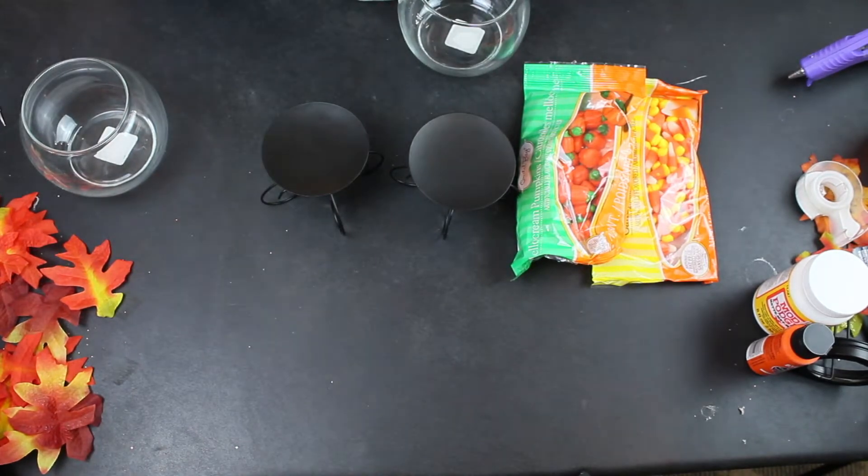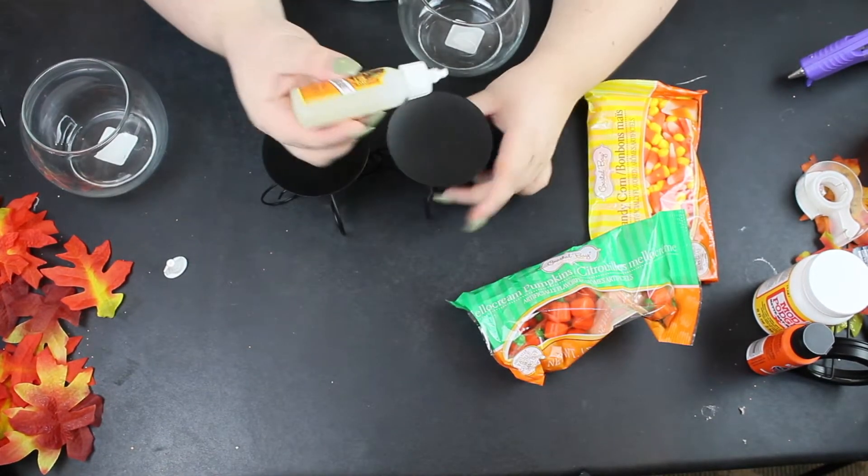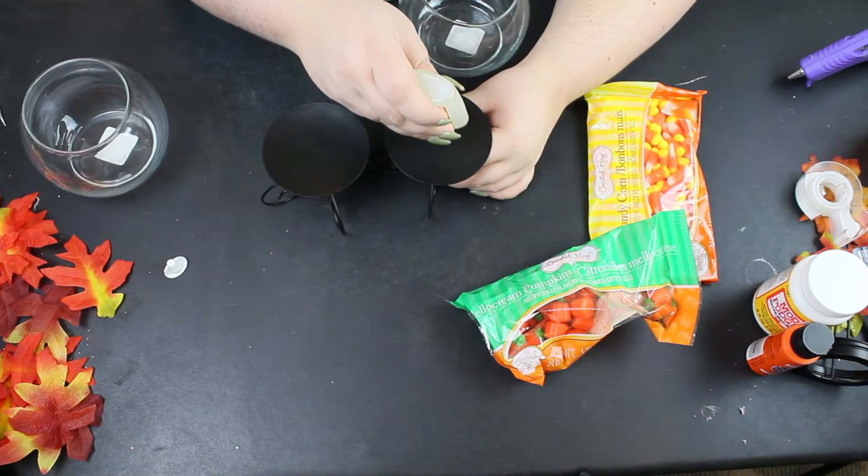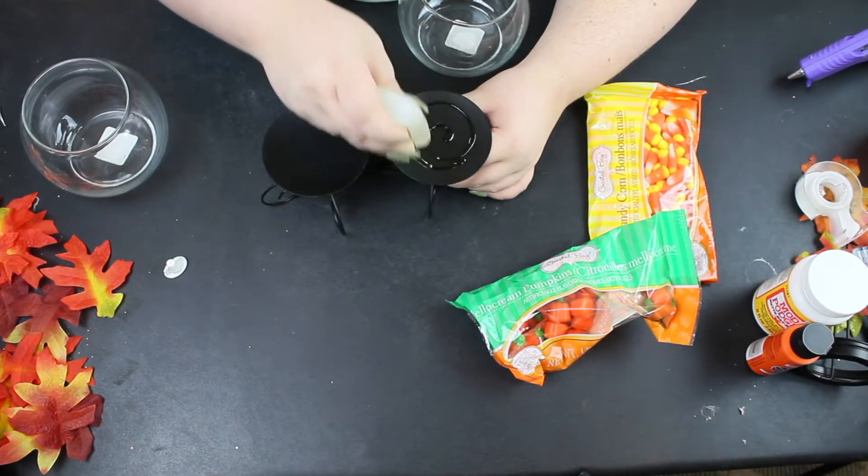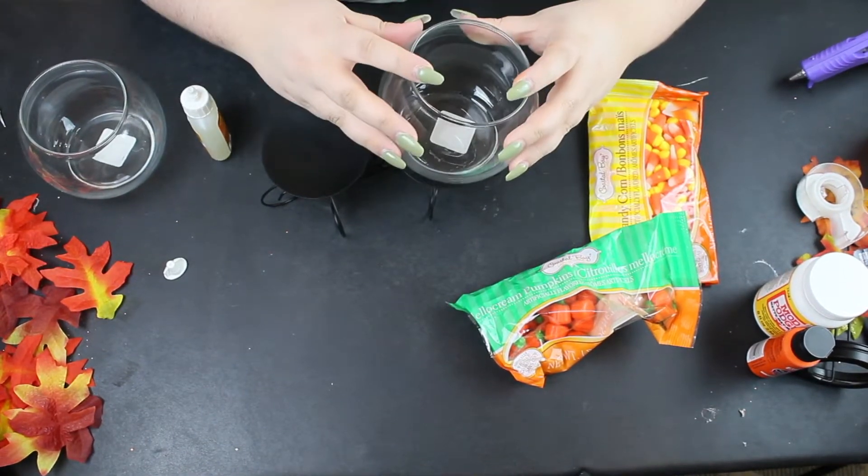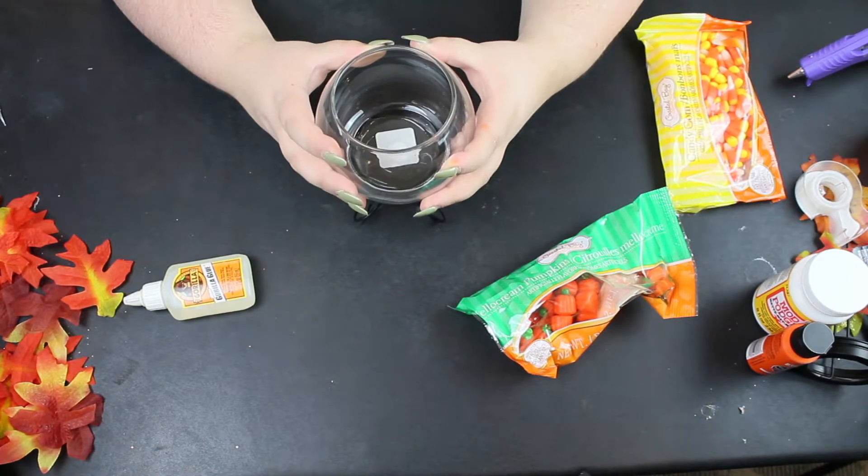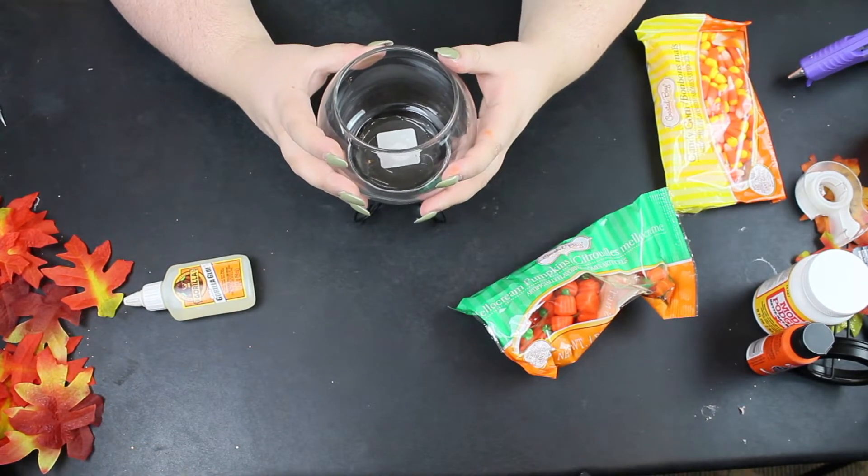I'm going to take the Gorilla Glue - and these are candle holders. So I'm just going to take the Gorilla Glue and put a pretty generous amount because I don't want this to come off. And then we will just hold this there. We're going to put books on these to let them sit and attach.